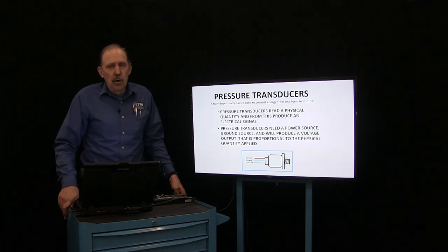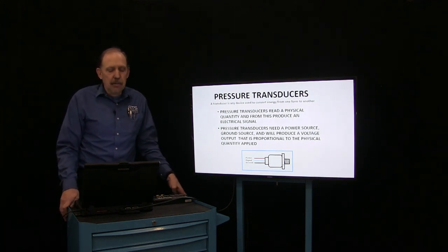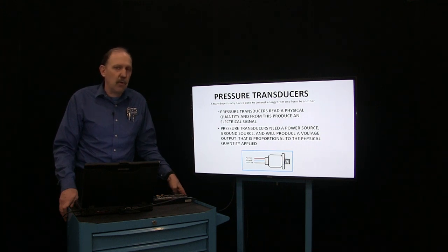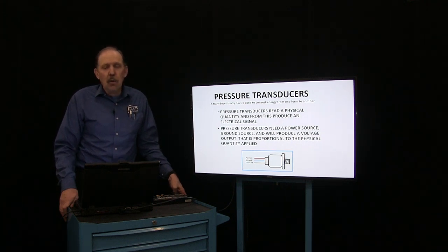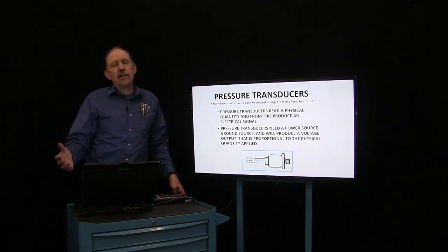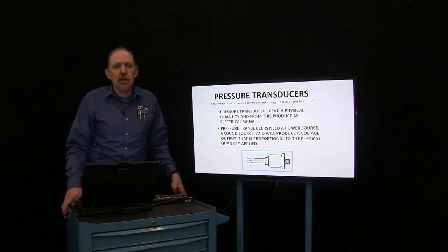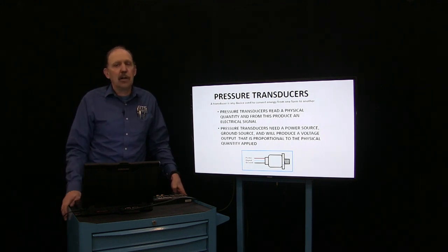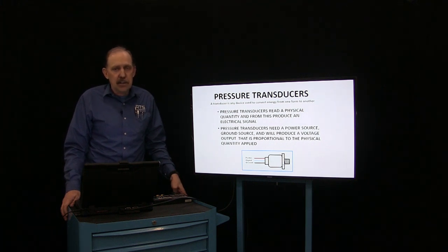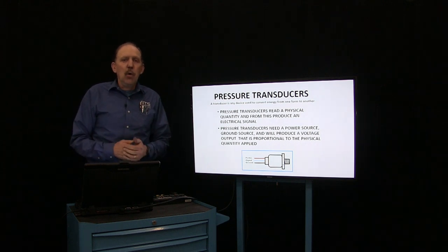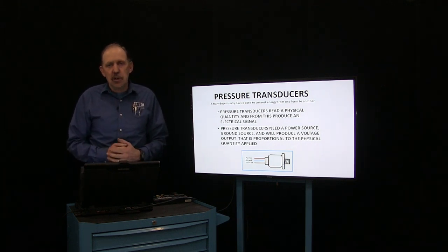To do these type of readings, we're going to use a pressure transducer. A pressure transducer is a device that converts energy from one form to another. We all know what a pressure transducer is because they're on cars — we have all kinds of sensors on a car that convert some type of mechanical or pressure movement into an electrical output. This electrical output will be read by an oscilloscope and displayed in such a format that we can make diagnostic decisions using this.